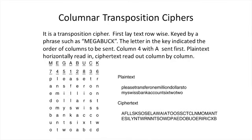Plaintext is written in horizontally, and ciphertext is read out column-wise based on the order of the key. The output generated begins with: A, F, L, L, S, K, S, O from the first column...